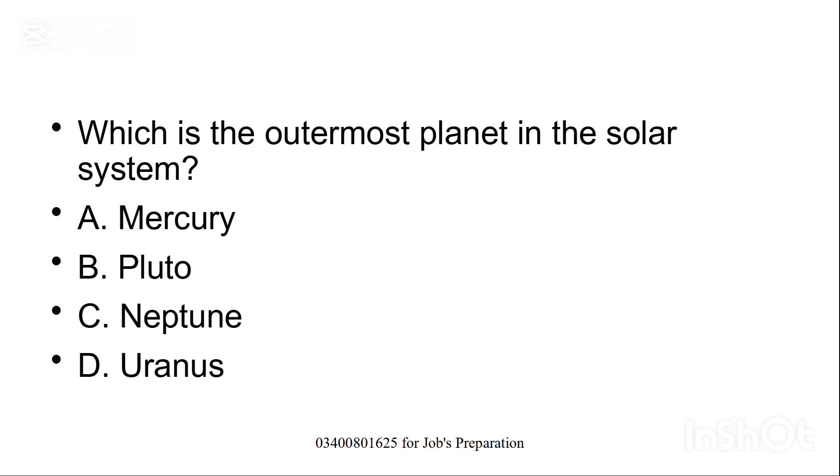Which is the outermost planet in the solar system? Option A: Mercury, B: Pluto, C: Neptune, D: Uranus. C is the correct option, Neptune.